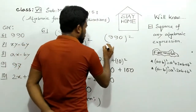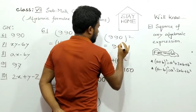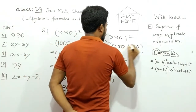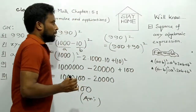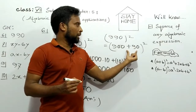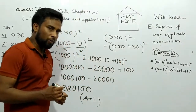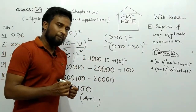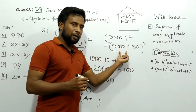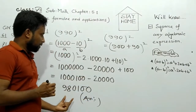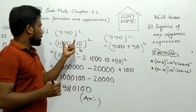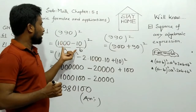We can also write 990 as (900 + 90) and apply the (a + b)² formula: a² + 2ab + b². At the end we find the same answer. So you can apply either the (a - b)² or (a + b)² formula for this expression.